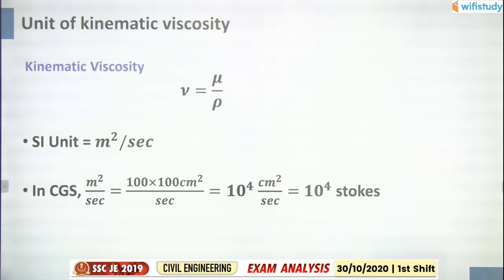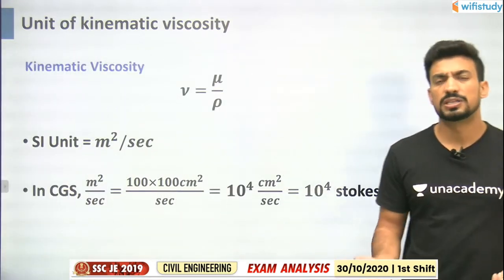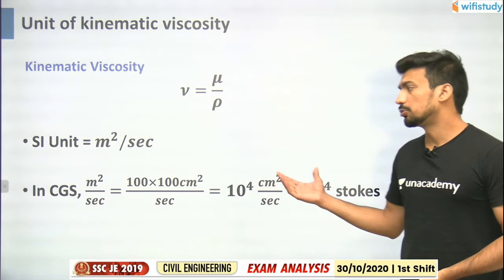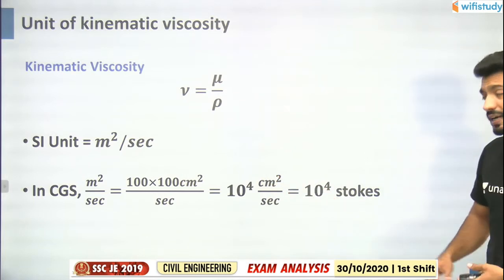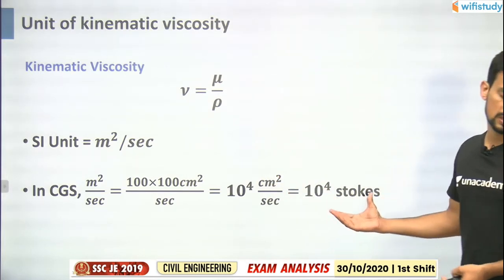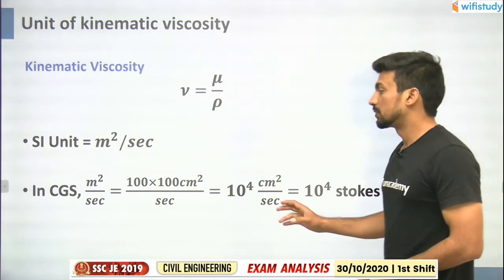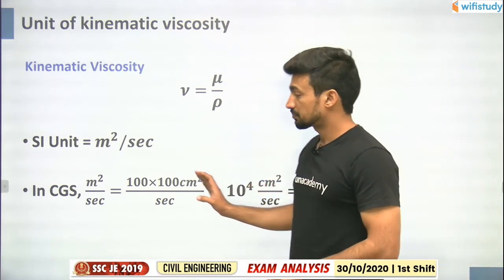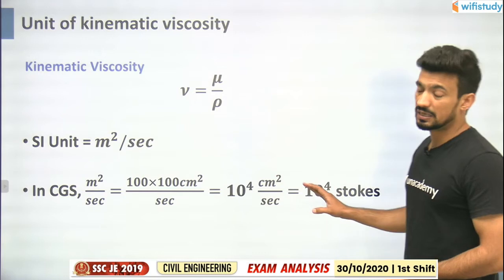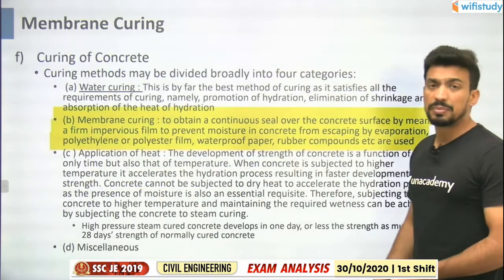Unit of kinematic viscosity was asked in one shift. Dynamic viscosity may also be asked. The unit is meter square per second; in CGS it is stokes or centimeter square per second. One meter square per second equals 10 raised to the power 4 stokes.